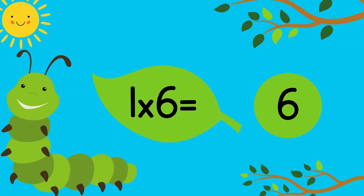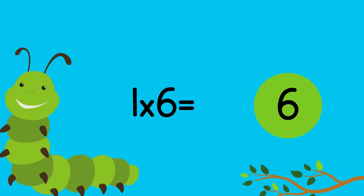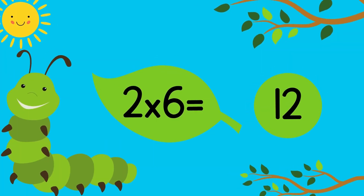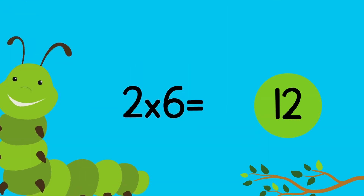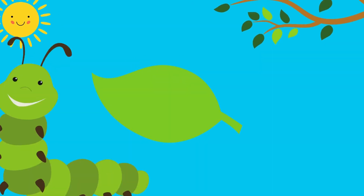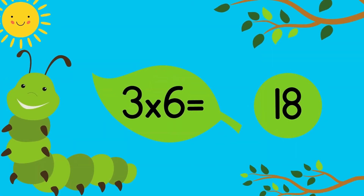1 times 6 equals 6. 2 times 6 equals 12. 3 times 6 equals 18.